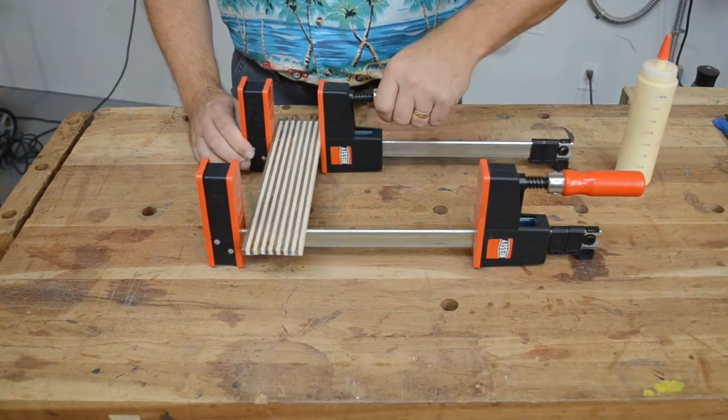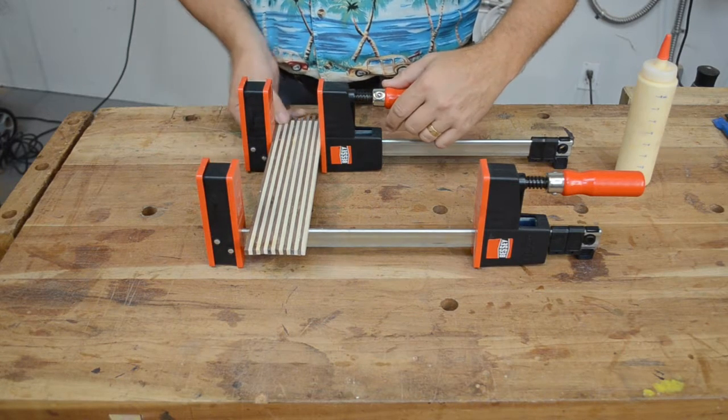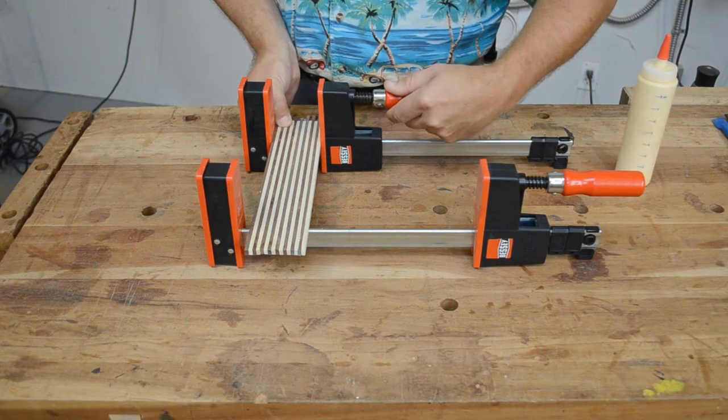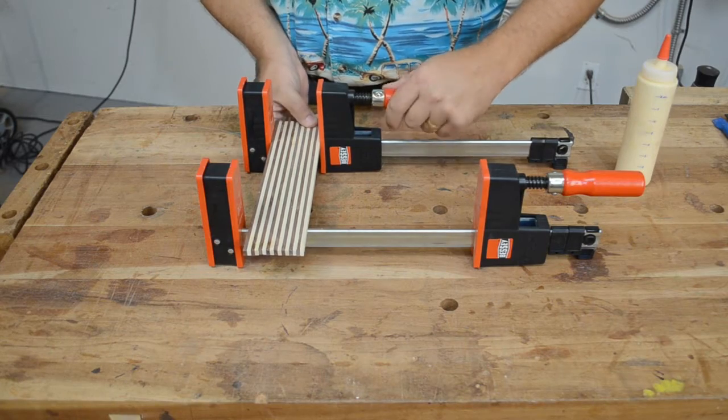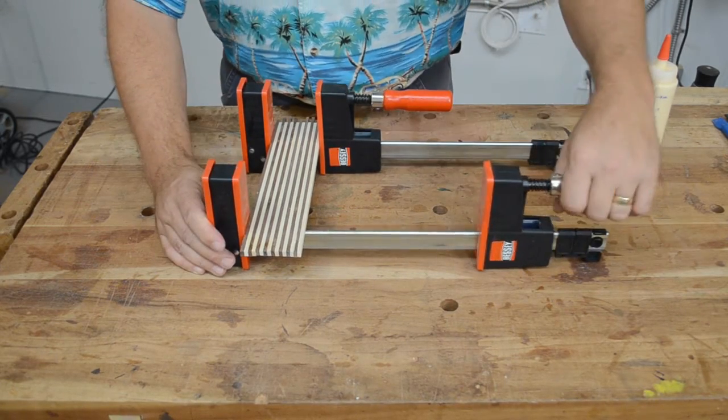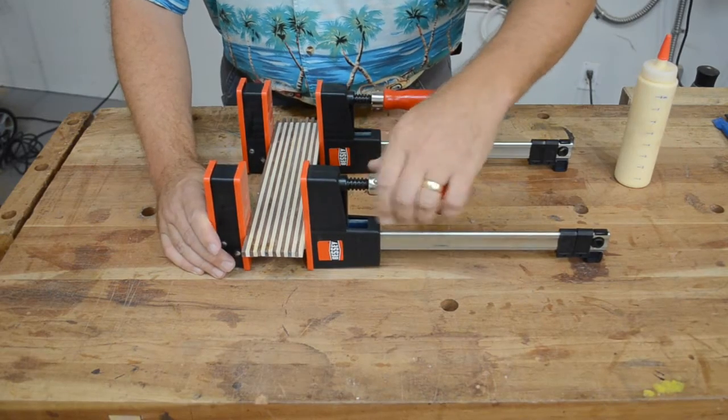You get all the features and utility of the K-body Revo's just in a smaller form. The smaller size is highly useful when space is limited and when clamping up smaller, more delicate projects.